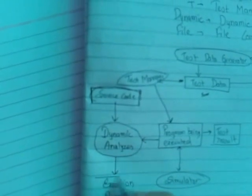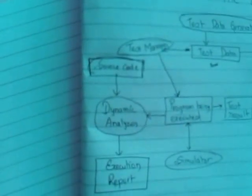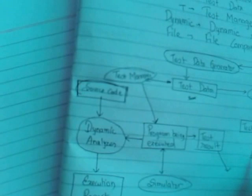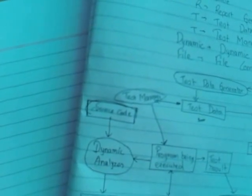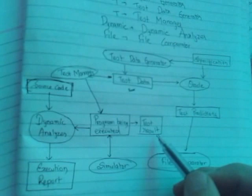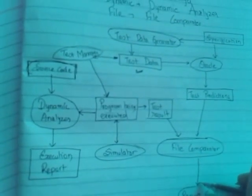What is the execution report? The Dynamic Analyzer produces an execution report showing how many times each part ran. Now, the test results are shown. I am going to show you the test prediction and compare the results using the File Comparator — you click the test result, compare, and make a comparison formula. Then I will show you the Report Generator.